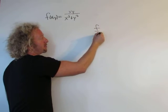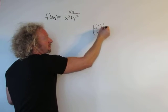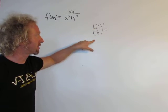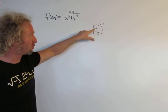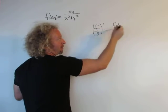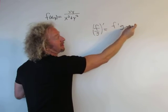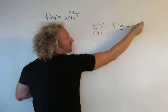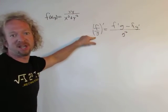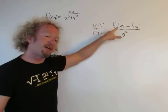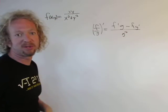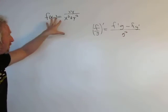...you think of f as the top function and g as the bottom function. It's the derivative of the first (or top) piece times the second (or bottom) piece, minus the first times the derivative of the bottom, over the second squared. So if this is first and this is second: derivative of the first times the second, minus the first times the derivative of the second, over the bottom squared.